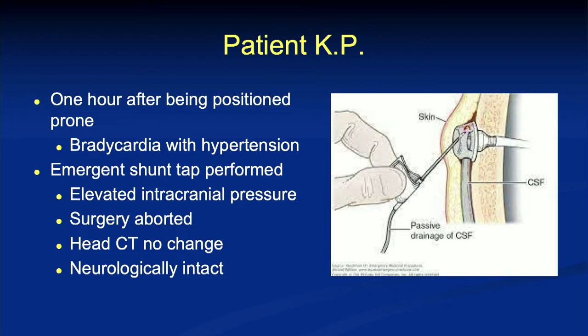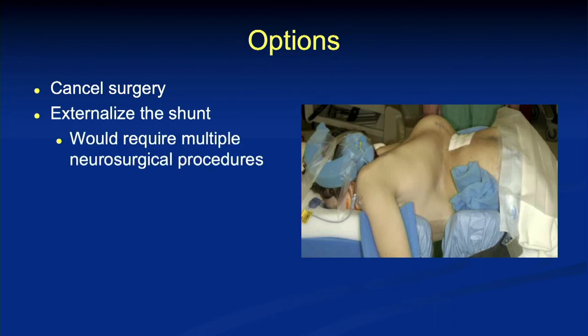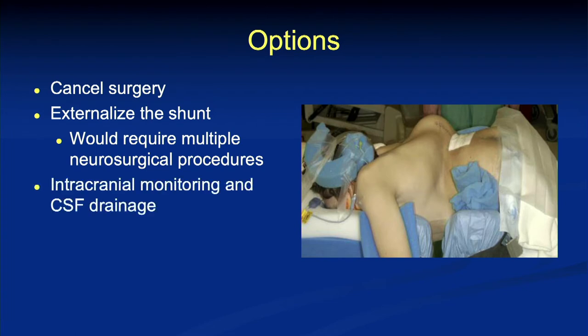We drained his CSF, obviously aborted surgery, sent him for a head CT, and neurologically he was at his baseline. We had several options — do we externalize the shunt? We ended up completing the surgery with an intracranial monitor in place, watching his CSF pressure throughout. When you lay someone prone with a severe spinal deformity, it's very hard to decompress the belly. If you don't decompress the belly and you've got a shunt going into the peritoneum, eventually that's going to back up. There have been reported post-operative deaths where patients don't wake up because their VP shunts failed.